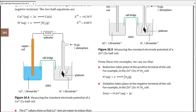Cathodes are usually negatively charged, which causes cations to be attracted and undergo reduction. Anodes are positively charged, allowing anions to undergo oxidation. In the case of the copper half cell, copper atoms are converted into ions by losing electrons — so copper becomes the anode and hydrogen becomes the cathode. Hydrogen gains electrons and copper loses electrons.